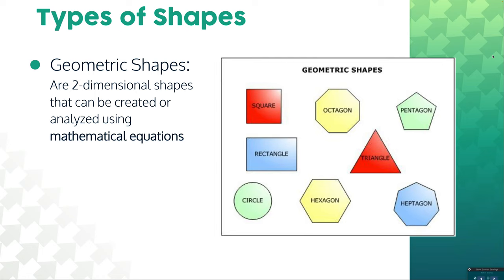There are a few types of shapes. Geometric shapes are probably the most familiar - basic two-dimensional shapes that can be created or analyzed using mathematics. So squares, octagons, rectangles, triangles, etc. All things that we're relatively familiar with.